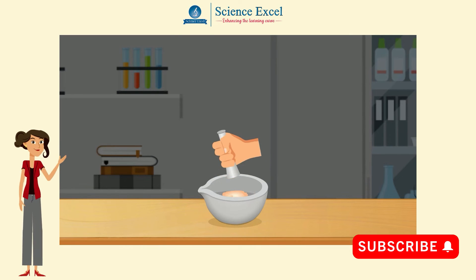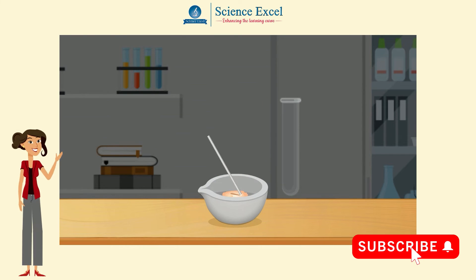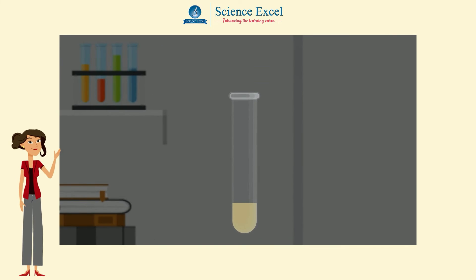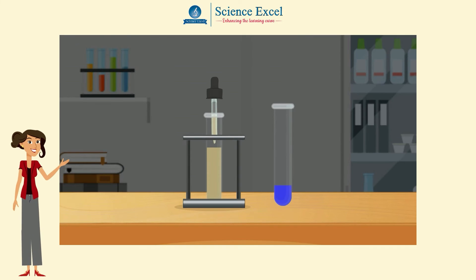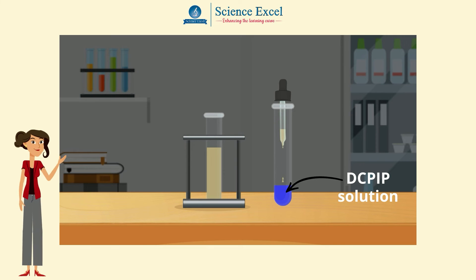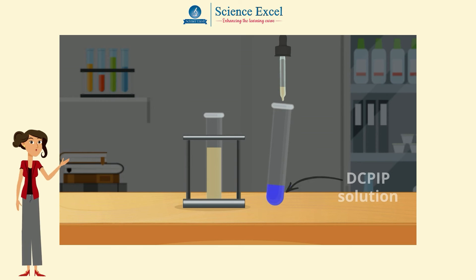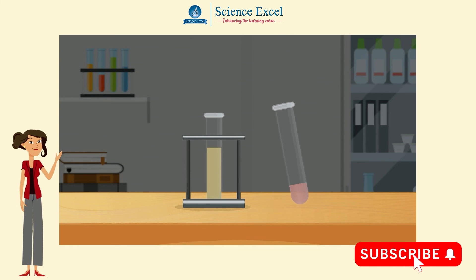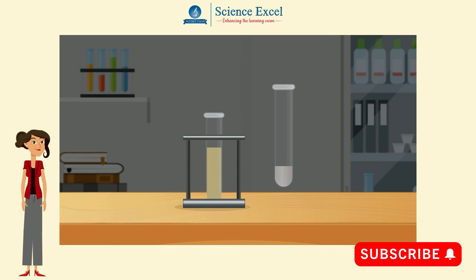Cut or grind a little food, add some water to it and shake it. Draw some of the clear liquid content and add this liquid food sample drop by drop into a test tube containing the DCPIP solution, keeping the test tube shaking until the color disappears, which shows that vitamin C is present.